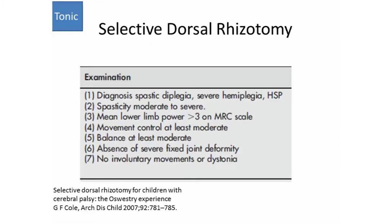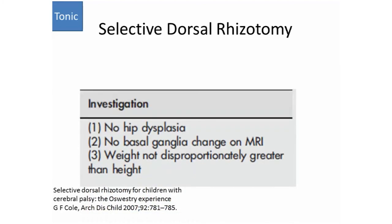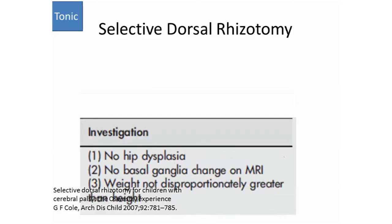On examination, these children should be spastic-diplegic, have severe hemiplegia, or hereditary spastic paraplegia, with moderate to severe spasticity, mean lower limb power greater than 3, at least moderate balance, no fixed deformities, and no involuntary movements or dystonias — as this surgery can make dystonia worse. On investigation: no hip dysplasia, no basal ganglia changes, and the child should not be overweight.